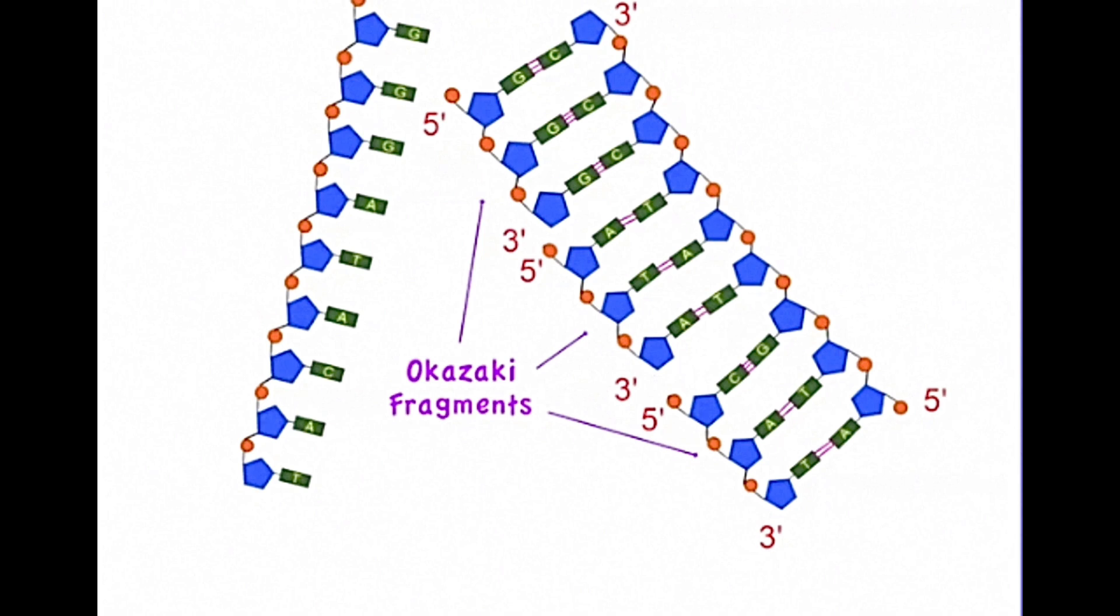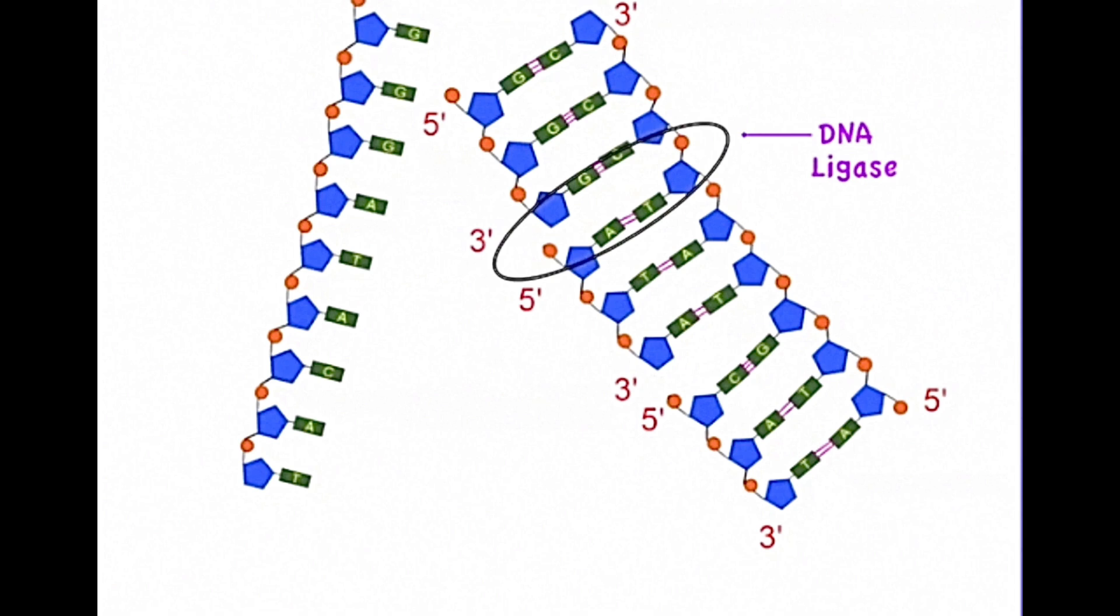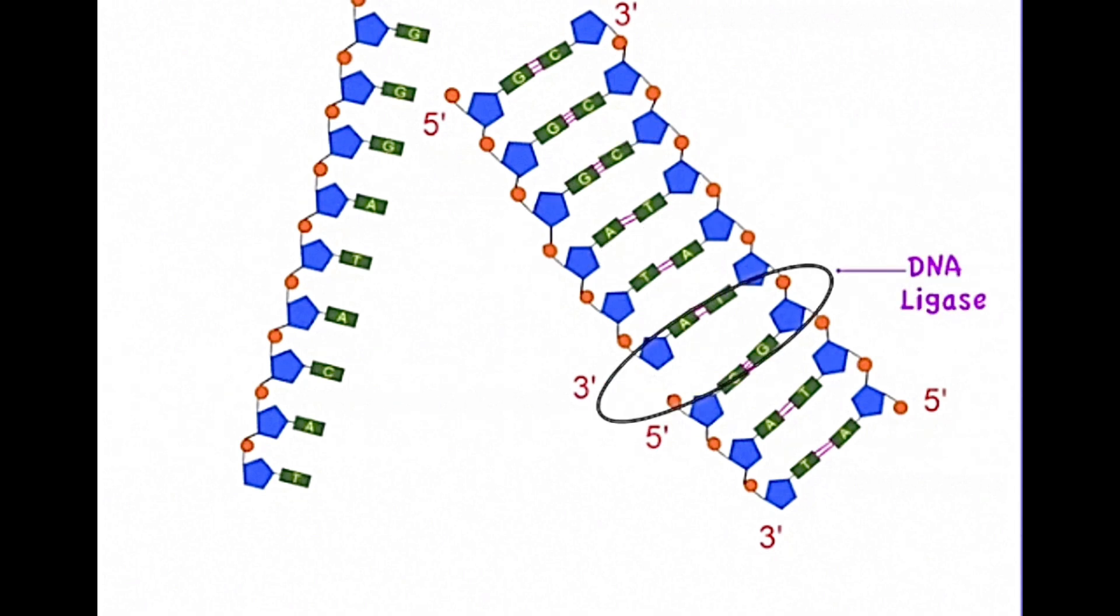The fragments created are known as Okazaki fragments. In order to complete replication on this strand the Okazaki fragments need to be joined together and this is done by DNA ligase.